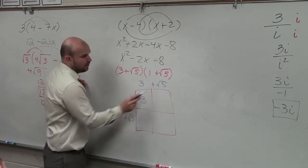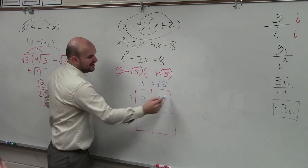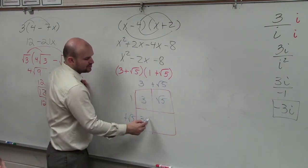3 times 1 is 3. 1 times square root of 5 is square root of 5. 3 times square root of 5 is 3 square root of 5.